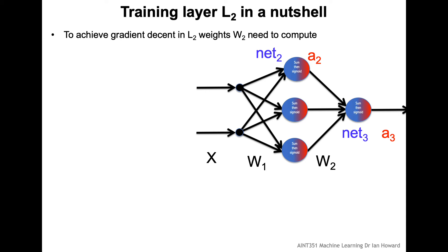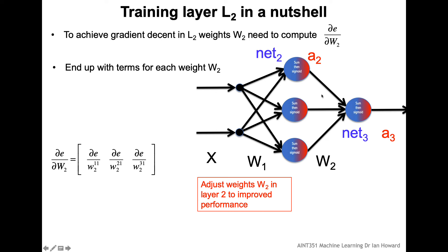To achieve gradient descent in layer 2, we need to compute dE/dW2. In this instance we have three weights in W2, so dE/dW2 is a vector with three elements — the same form as weight vector W2. The inputs going into the final network correspond to the outputs from the first network, represented by a2, with three elements.